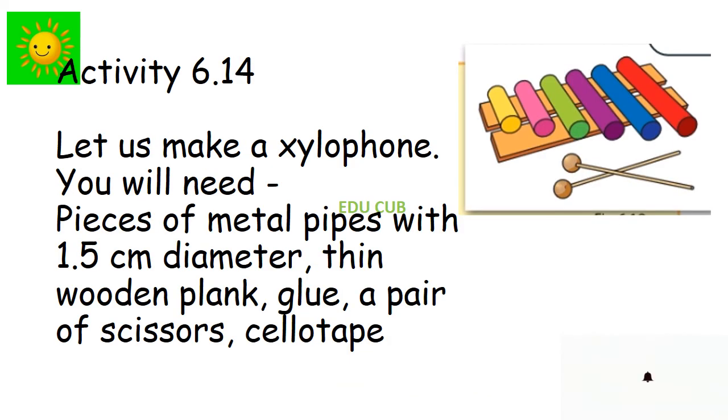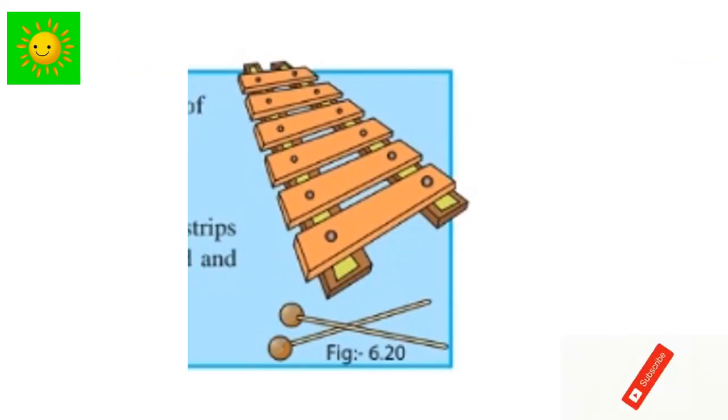Next one, make a xylophone. We need six metal pipes with 1.5 cm diameter, thick wooden plank, glue, a pair of scissors, a lot of tape. We can use paper also. Cut a piece of metal pipes as shown in the figure. Then paste the cylinders on the wooden plank which has 5 cm wide and 20 cm length as shown in the figure. Take two sticks and tap the cylinders rhythmically. You can hear different sound in each pipe. This is the instrument which is related to above practicals.